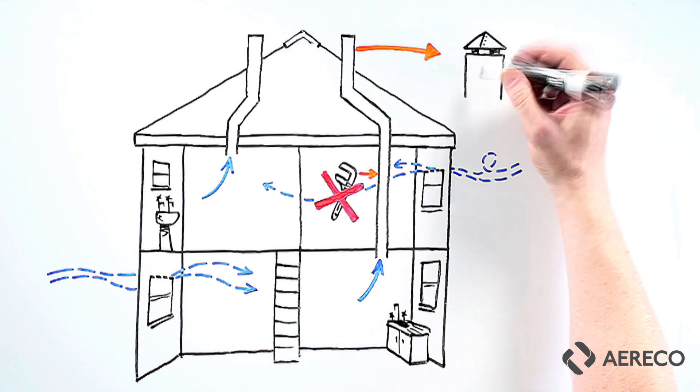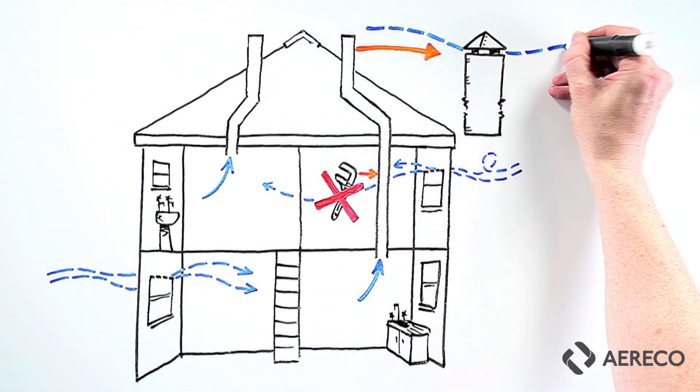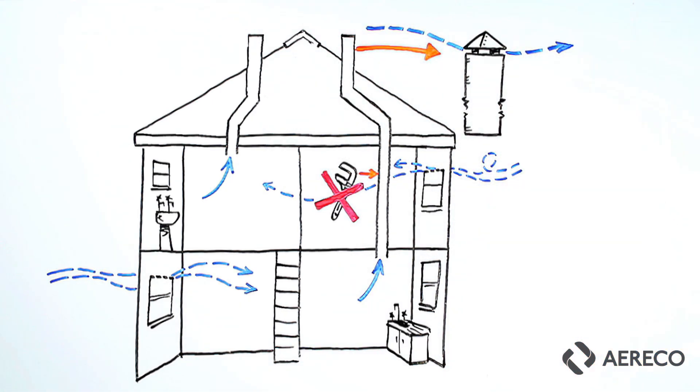It creates a draw by a combination of suction from wind at the top of the flue and a temperature difference between the top and the bottom. This is called the stack effect.